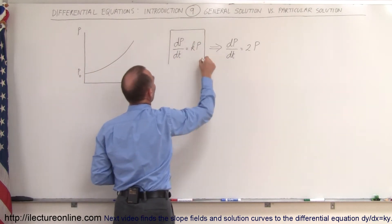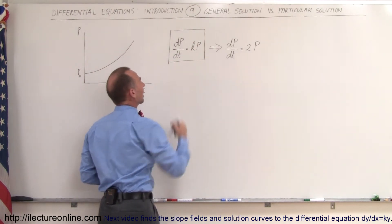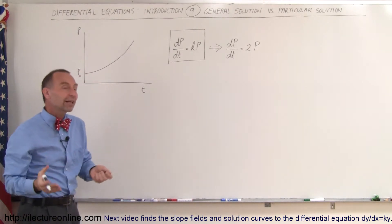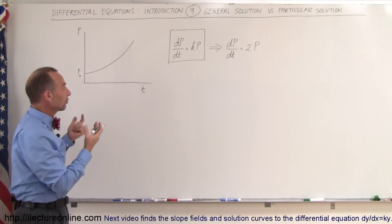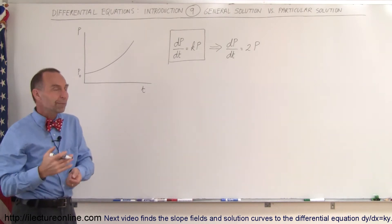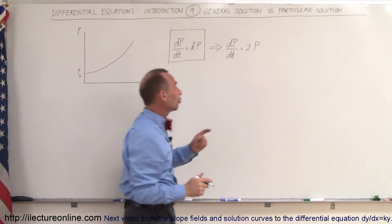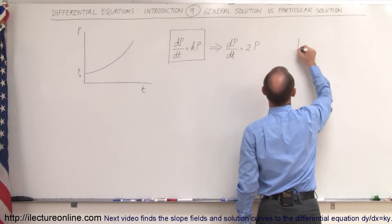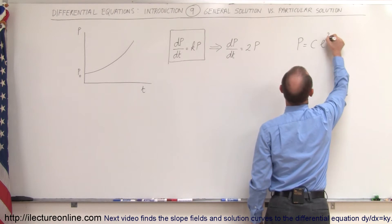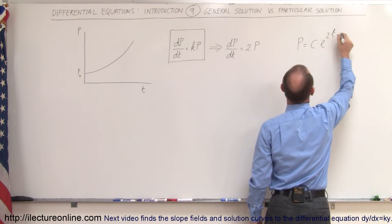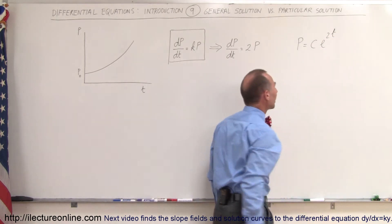It's simply the rate of change in the population is equal to a constant times the population. And let's say that for this particular example, let's call the constant 2. So here we're trying to find the solution to dp/dt is equal to 2p, and we know that the general solution of this is that p is equal to some constant of integration times e to the 2t. So this would be kt, but in this case k is equal to 2.